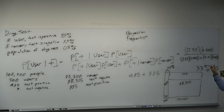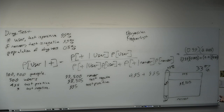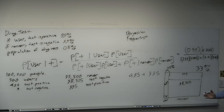A Bayesian prior is some knowledge you have previously about the world. You take that and update, putting odds on basically everything. What's the probability the sun will rise tomorrow? Because it always has — you have however many days you've been alive seeing the sun rise every day, giving you an insurmountable amount of evidence. But the probability isn't exactly one — maybe 99.99999%. That's Bayesianism.